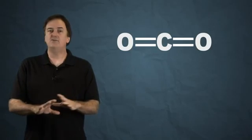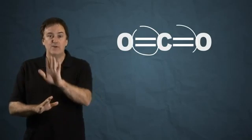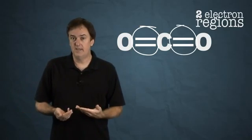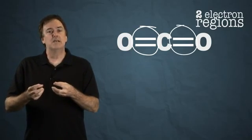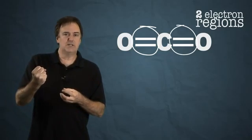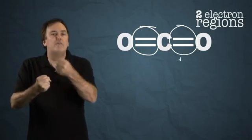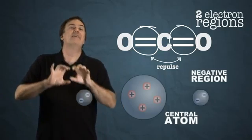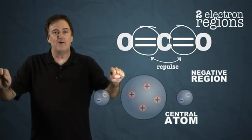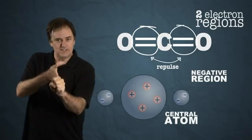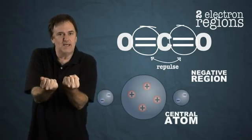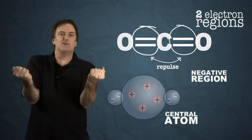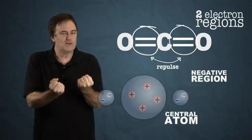The way it works is you take your electron dot formula and count electron regions around the central atom. Each of those regions is a negatively charged region, so it's going to repulse all the other negatively charged regions and they're going to try to get away from each other. They can't completely get away though because the nucleus of the central atom is holding them in.